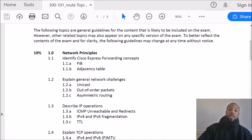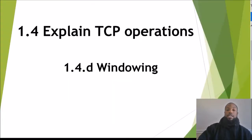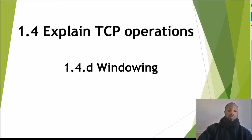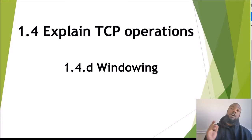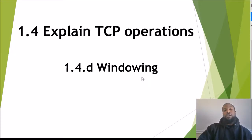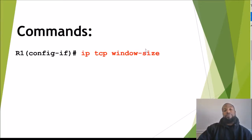Windowing is a mechanism that TCP uses to control the flow of traffic that a sender is going to send to a receiver. It's kind of like shifting gears — controlling how much traffic to send, whether to slowly keep sending more or slow it down.